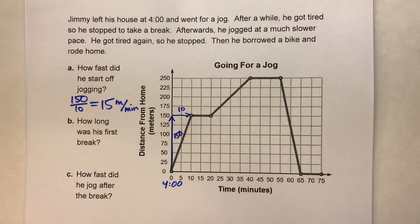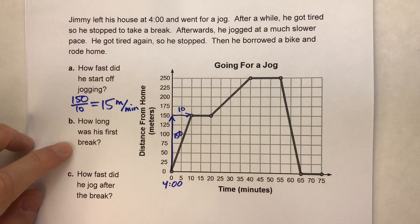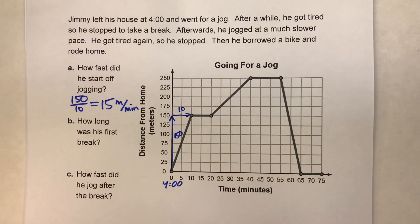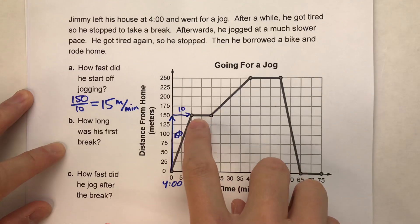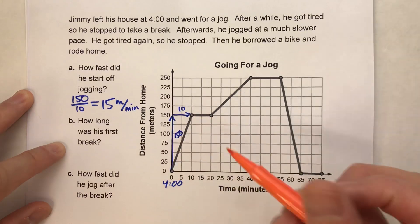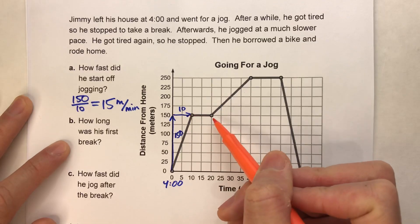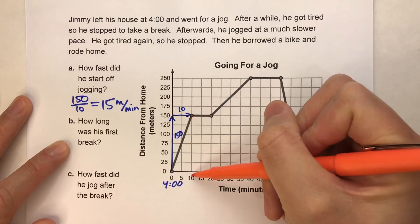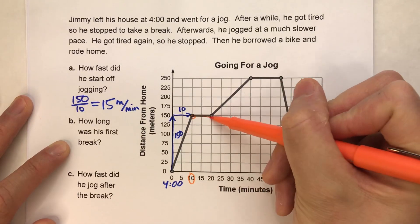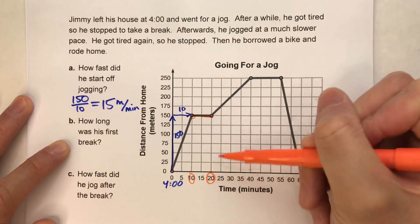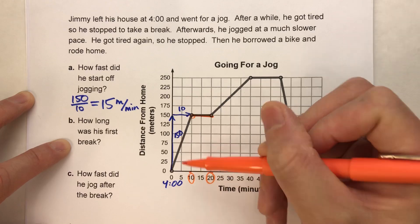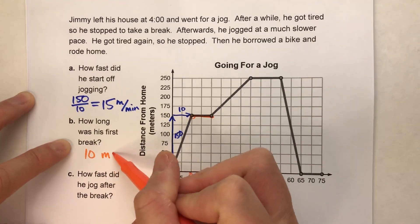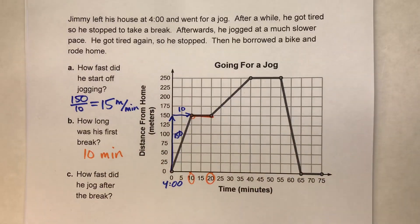Alright. Now, the next question here is, how long was his first break? Well, let's see. In our graph, right here represents our first break. So this flat line. Now, how long was it? Well, he started it at 10 minutes and ended it at 20 minutes. So that would make that 20 minus 10, 10 minutes long. Pretty easy.